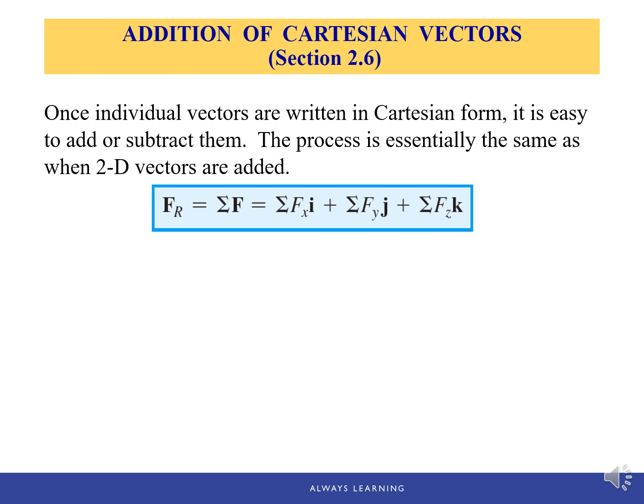The overall method is very similar to the steps we use in 2D problems. Once the individual vectors are written in Cartesian form, it is easy to add or subtract them, and the process is essentially the same as when 2D vectors are added.